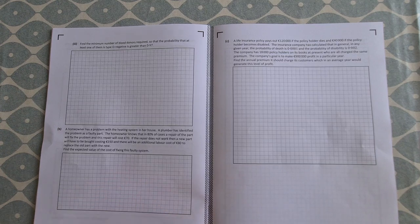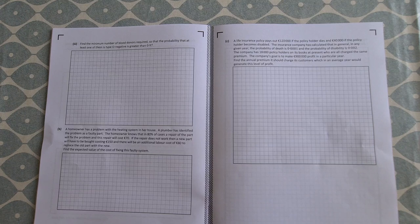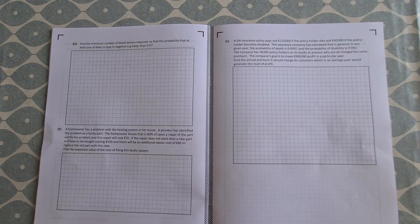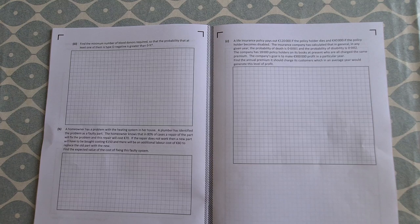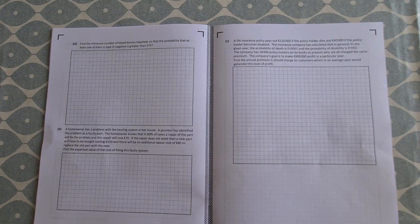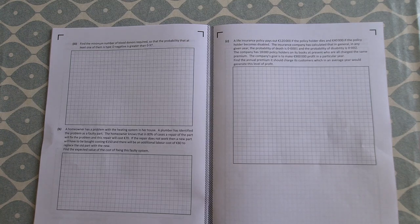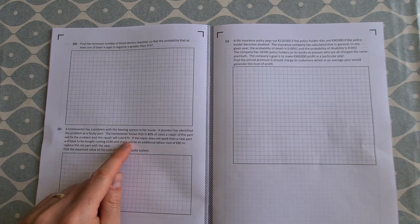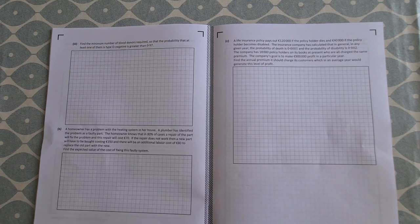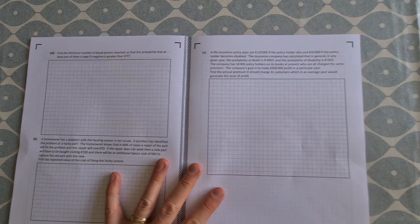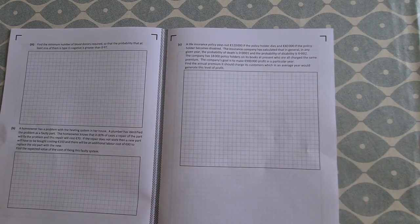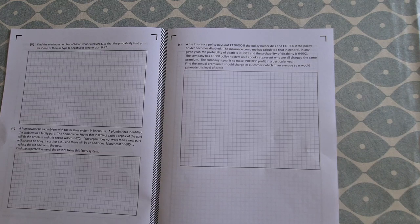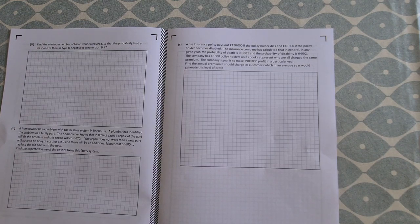Away from that, a homeowner has a problem with the heating system. Plumber identified the problem as a faulty part. Homeowner knows that in 80% of cases the part will fix the problem, it will be 70 euro. If the part does not work, a new part will have to be bought for 150 euro. So there'll be an additional labor cost of 80 euro to replace the old part with new. Find the expected value. So obviously the expected value will be above the 70 euros, but we have a probability of it being a certain amount and then we can work it out there. And then there's a bit more expected value here. Life insurance paying out and you're asked to find an annual premium it should charge its customers, which in an average year would generate this level of profit. So expected value again.